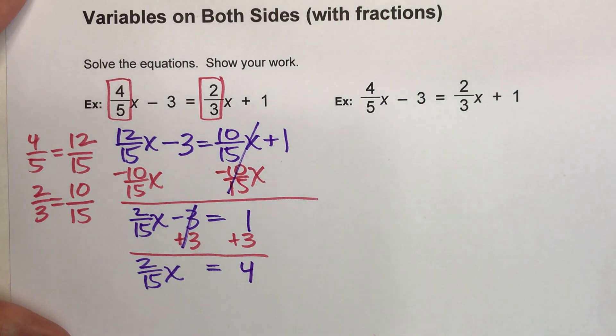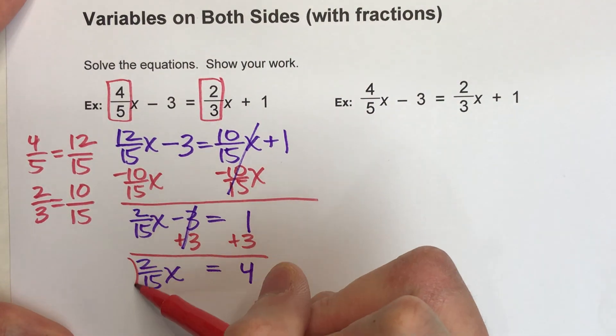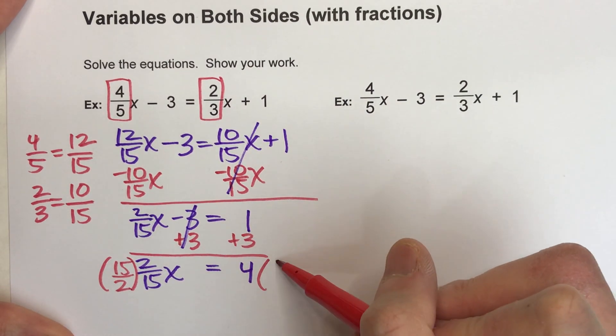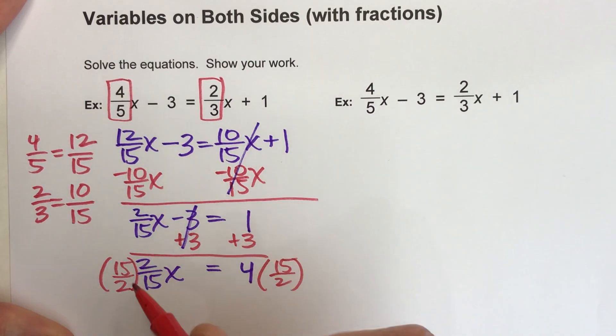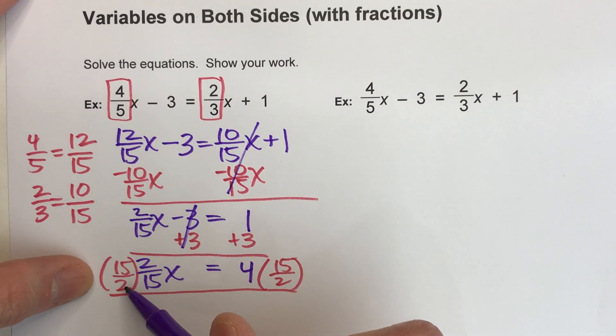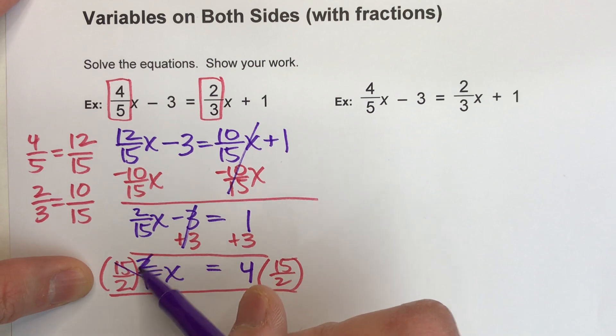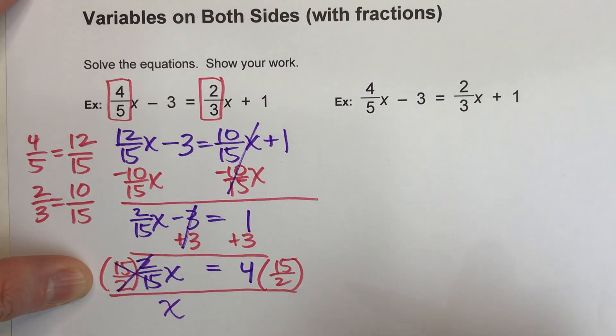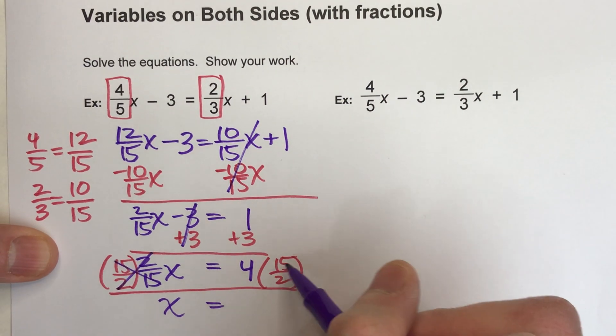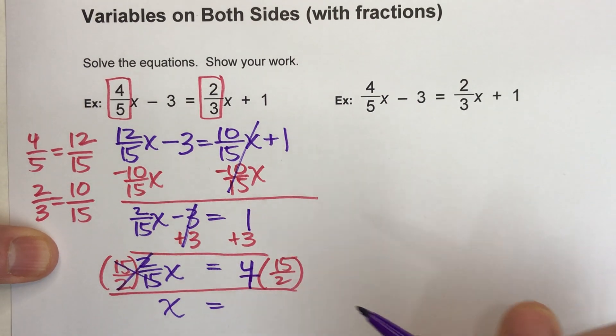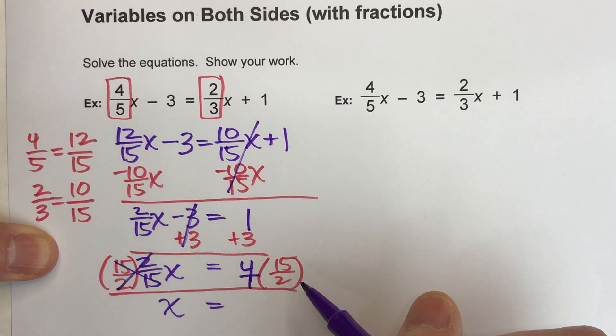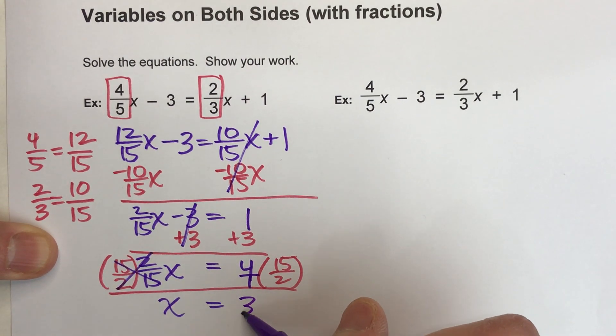And then for my last step, I'm going to undo that fraction by multiplying by the reciprocal. When I do that, the fractions undo each other, because 15/2 times 2/15 makes 1 whole, so this becomes 1 whole x equals. On the other side, I'll do 4 times 15/2, I can just think of it as 4/1. So 4 times 15 is 60, 1 times 2 is 2, and 60/2 is just 30.